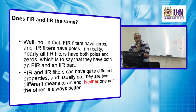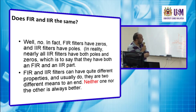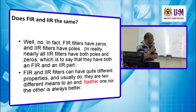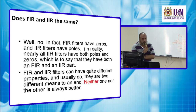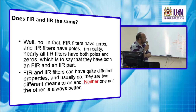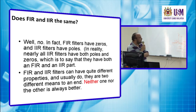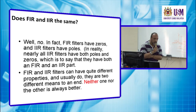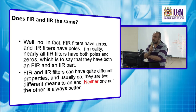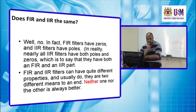Does FIR equal IIR? The answer is no. FIR filters have zeros, and IIR filters have poles. In reality, nearly all IIR filters have both poles and zeros, which means they have both FIR and IIR parts — meaning the IIR filter includes in its structure an embedded FIR filter.